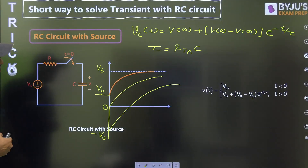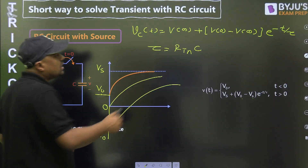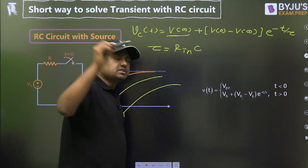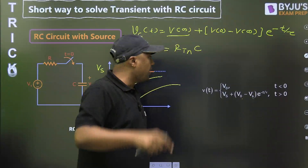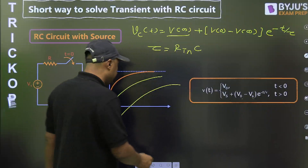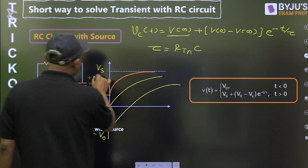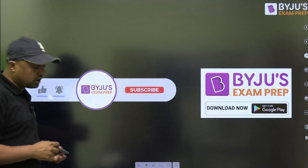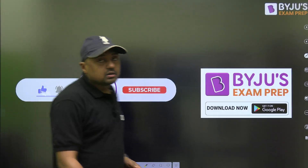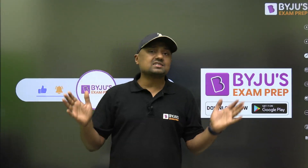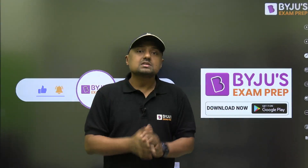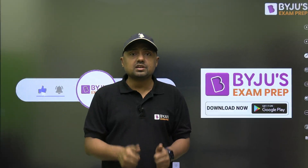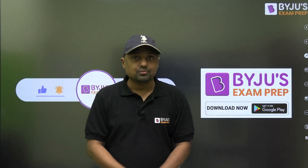This is the short trick to solve any type of question on transients with RC circuits. Remember: under DC steady state, the capacitor acts as an open circuit. Stay tuned with us, subscribe to our channel, like the session, and share the link. Thank you.